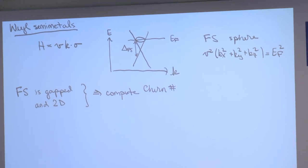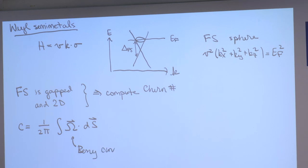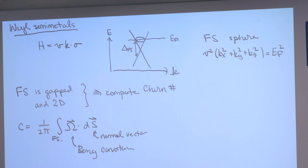We can actually do this explicitly. The Chern number is 1/(2π) times the integral of the Berry curvature dotted with the normal vector dS over the Fermi surface. This gives us a way to define the Chern number of a particular Weyl point.